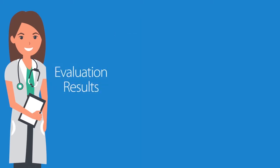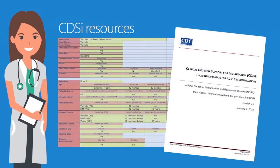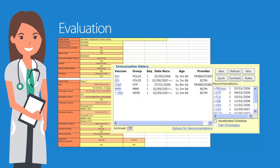Next, the evaluation results combined with additional supporting data are used to forecast when a patient should receive his or her next immunization. The CDSI resources are designed to support your CDS engine to evaluate and forecast. Here's how it works. During evaluation, the patient's immunization history and supporting data are examined.